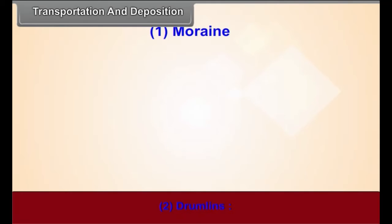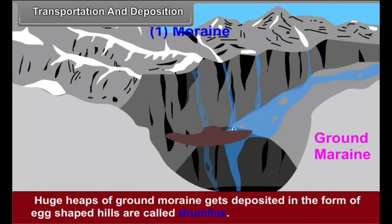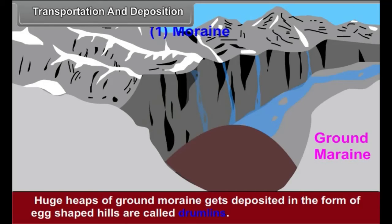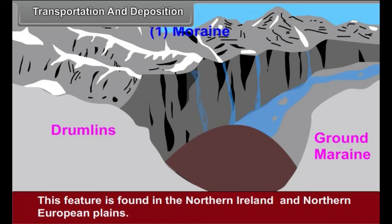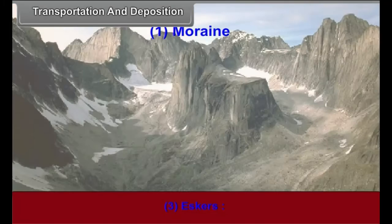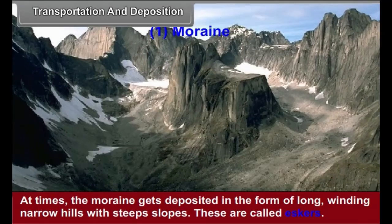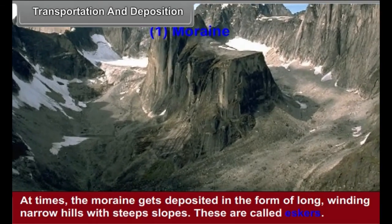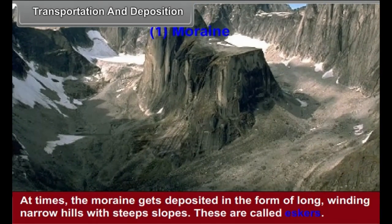Drumlins: Huge heaps of ground moraines deposited in the form of egg-shaped hills are called drumlins. This feature is found in northern Ireland and north European plains. Eskers: At times, the moraine gets deposited in the form of long, winding, narrow hills with steep slopes. These are called eskers.